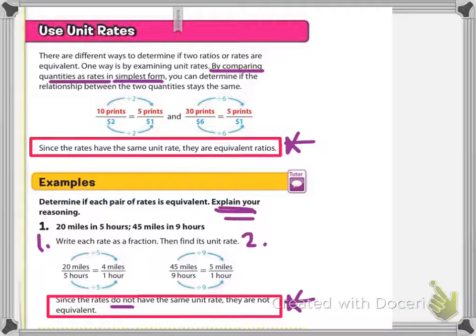45 miles in 9 hours, if you change it to its unit rate and divide by 9, you have 5 miles per hour. So since the rates don't have the same unit rate, they are not equivalent.